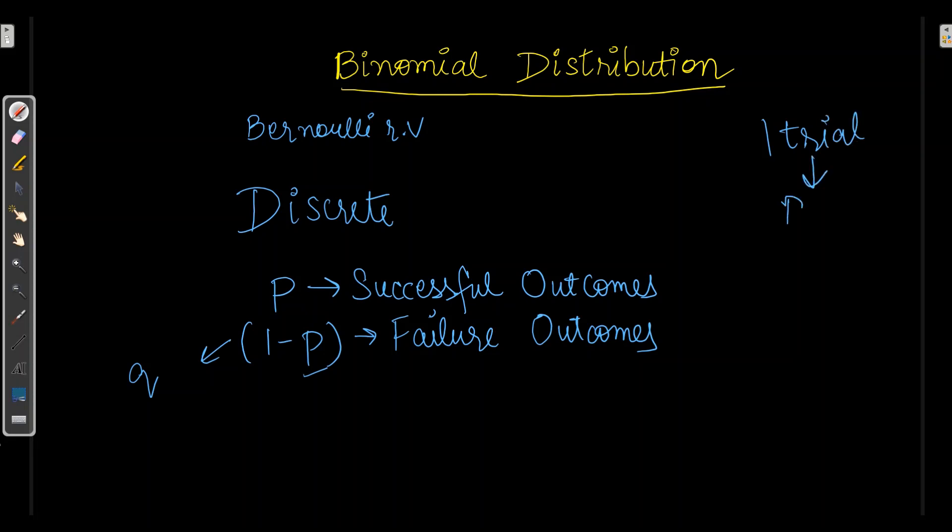If we have one trial of binomial distribution, it will be referred as Bernoulli distribution. Now, probability of getting X successful outcomes out of N trials is when we have X as random variable, it will be following binomial distribution with N and P. Where N refers to number of trials whereas P is probability of successful outcomes.